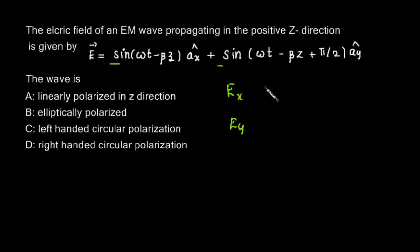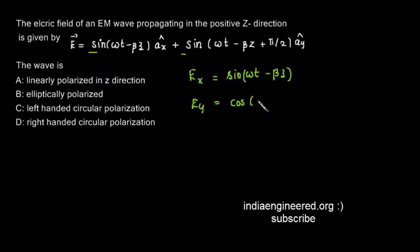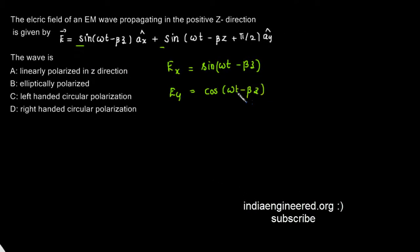Ex can be written as sine of (ωt − βz), and Ey is sine of (ωt − βz + π/2), which can be written as cos(ωt − βz). So we have Ex and Ey components. The wave is coming towards us — out of the screen — with Ex along one axis and Ey along the other, and positive z coming out of the screen.